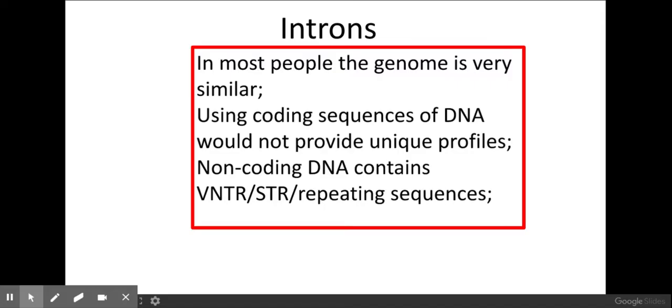Now when we are using genetic profiles we use introns and these are the non-coding regions of the DNA. Now anything in a red box from this PowerPoint is taken directly from the mark scheme and you need to be aware of what that is. So the reason why we're using introns is because the non-coding DNA is most likely to be different from other people.